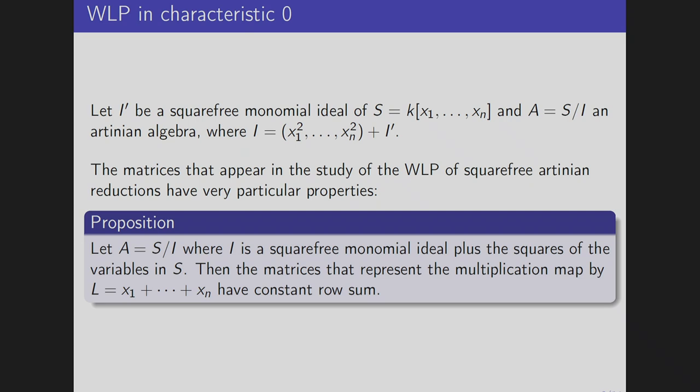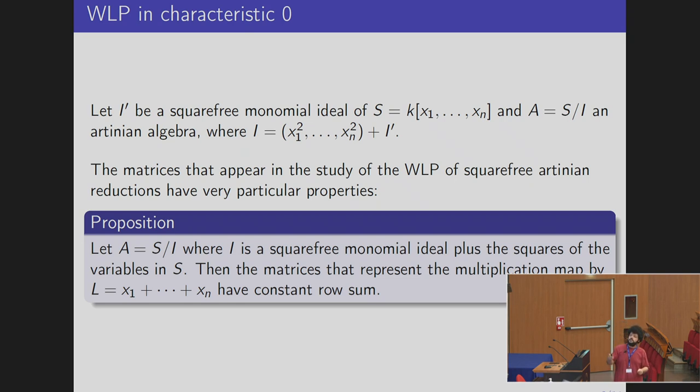Let's handle the case of WLP in characteristic zero. If we have a square-free monomial ideal of the polynomial ring and take the quotient by the ideal plus the squares of the variables, we have an Artinian ring with a very nice combinatorial structure. Because of this structure, the matrices we get as multiplication maps have a very particular structure — specifically, this proposition: when you take a quotient like this, the row sum of the matrix is constant, so if you take any row and sum the entries you always get a fixed number in each degree.